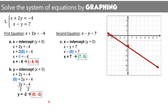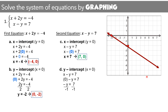For the y-intercept of the second equation, change x to 0. Using 2x minus y equals 7, substituting x with 0 leaves negative y equals 7. Dividing both sides by negative 1 gives y equals negative 7. Therefore, the ordered pair is (0, −7).